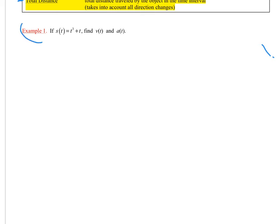Example number one. I'm giving you a position function. So this is the position of a particle at any time T. I want to find V of T. I want to find A of T. Well, V of T is equal to S of T, or I should say S prime of T. And so that's going to be 3T squared plus 1. That would be my velocity function.